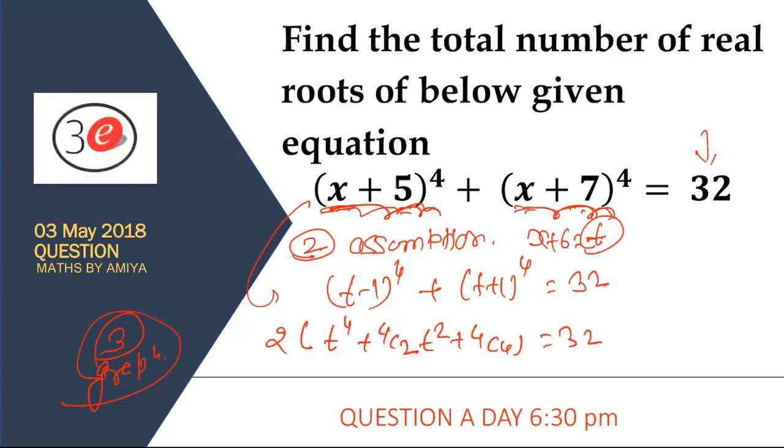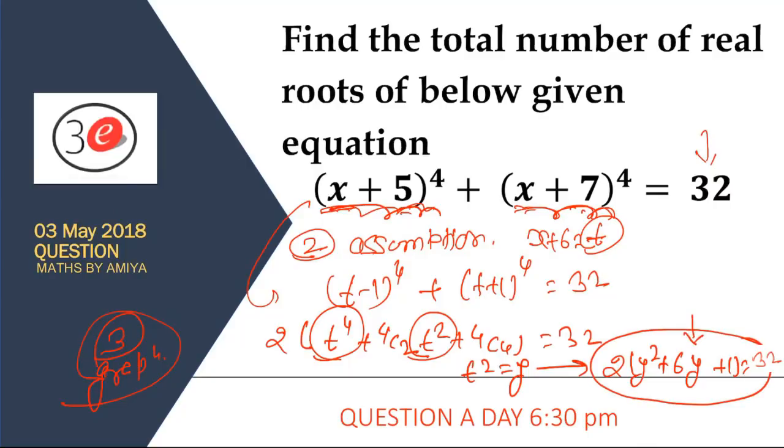We have an expression. Just assume t^2 equals y. So the expression becomes 2y^2 + 6y + 1 = 32. You have another equation in quadratic form. I can solve for y values.